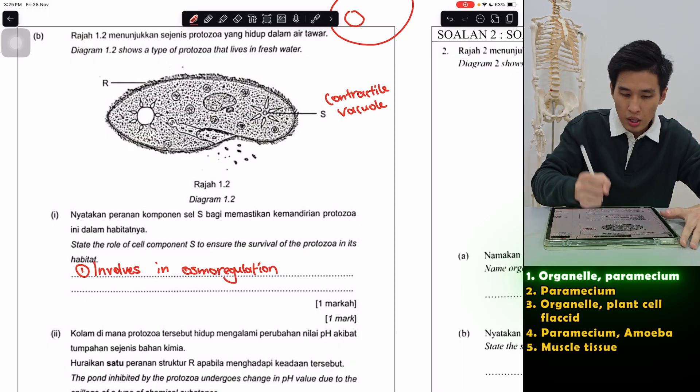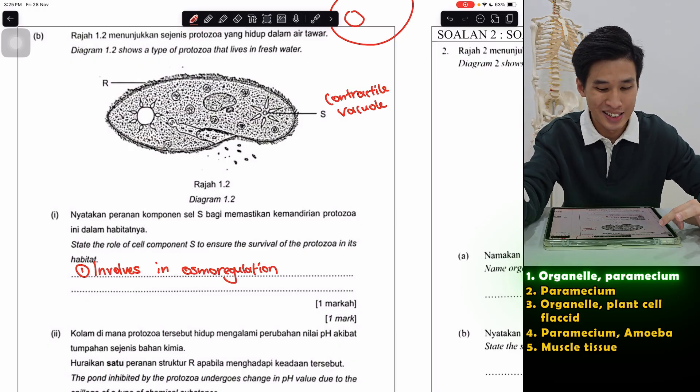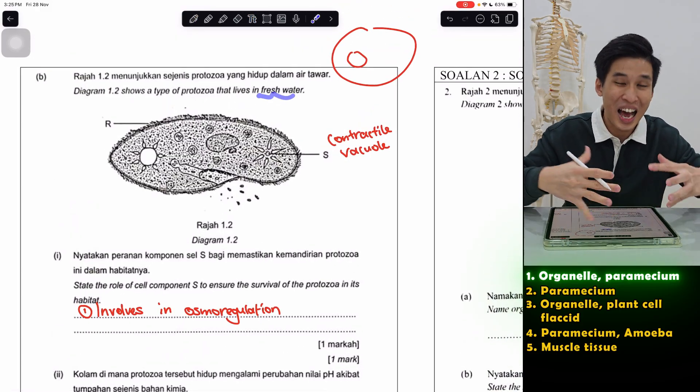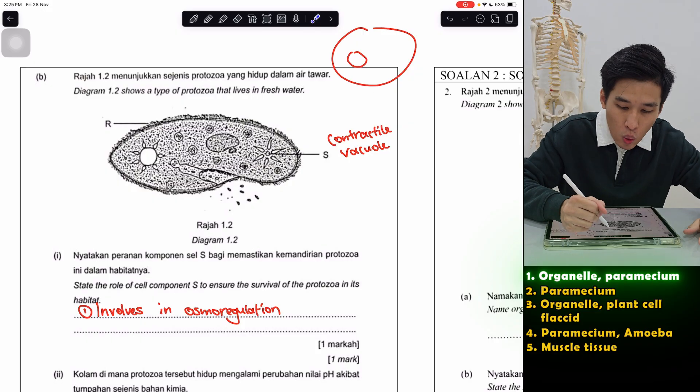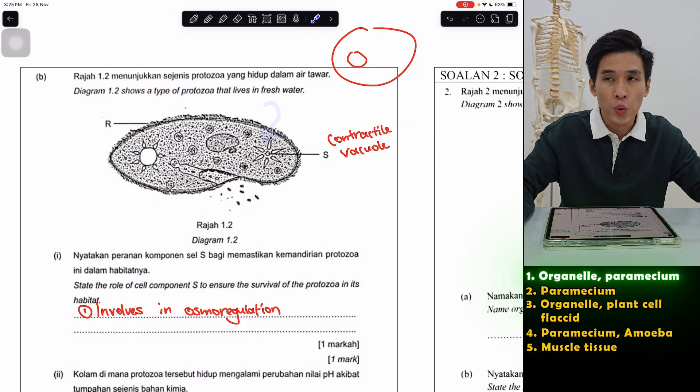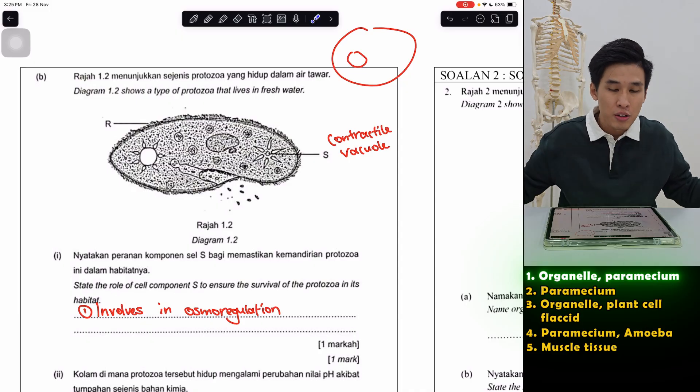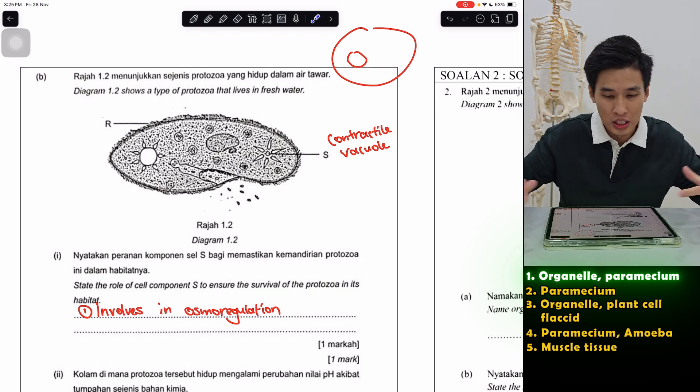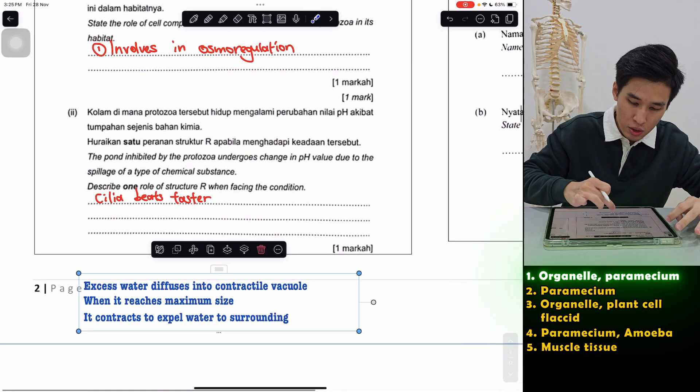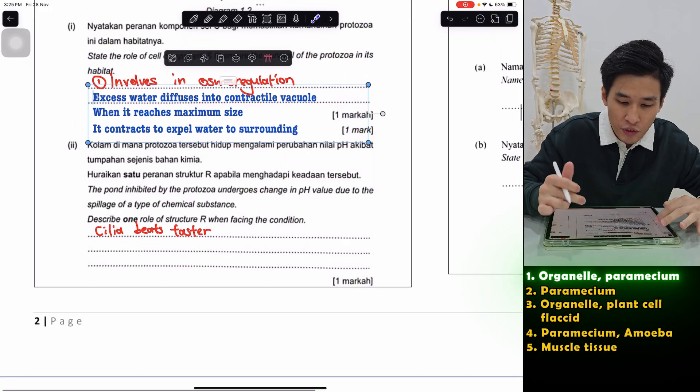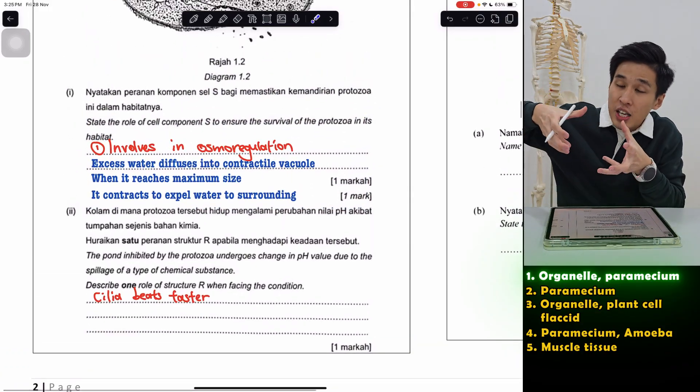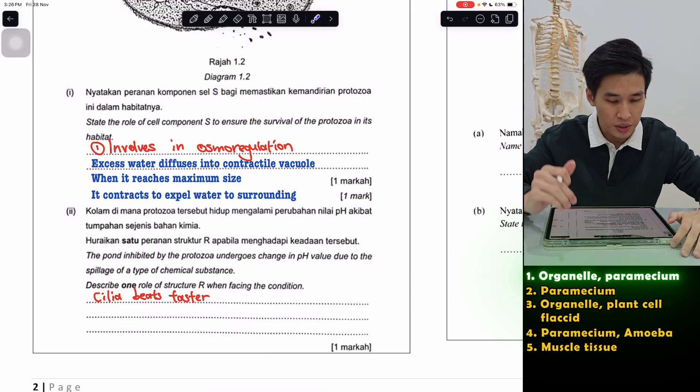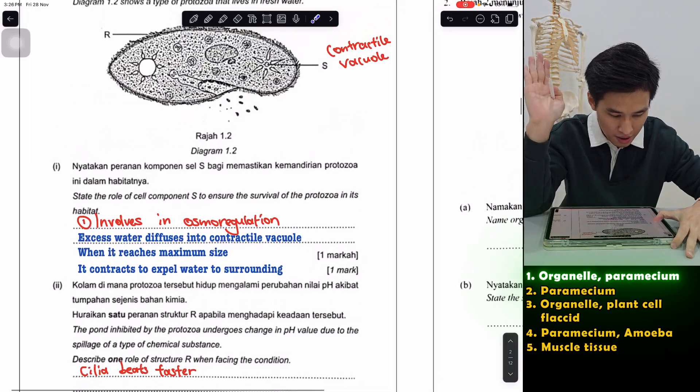But let's say if they ask us to explain. So basically what does it do here is, since they live in fresh water, it's hypotonic on the outside. Water will easily diffuse in. If the water came in, they will burst and die. So this contractile vacuole is like our bladder, keep on contracting to expel water. So let me give you the full explanation here. Excess water diffuse into the contractile vacuole. Once it expands until maximum size, it will contract to expel the water to the surrounding. Easy. For amoeba, also the same thing.